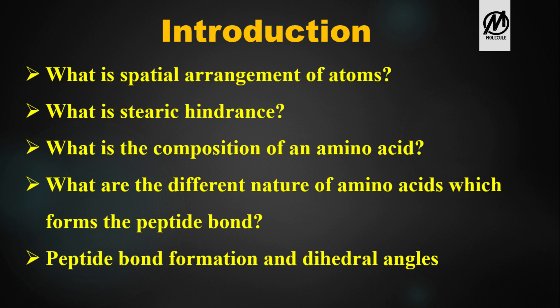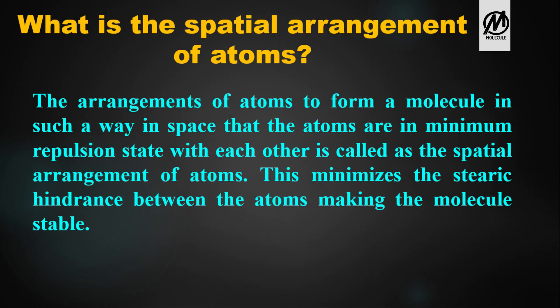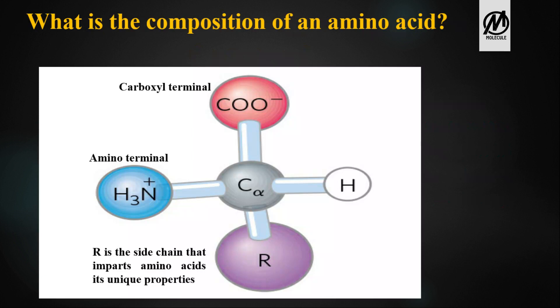What is the spatial arrangement of atoms? The arrangement of atoms in such a way that they are in a minimum repulsion state with each other is called the spatial arrangement of atoms. This minimizes the steric hindrance or the repulsion between atoms, making the molecule stable.